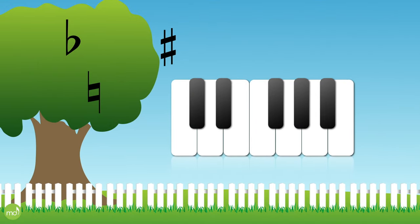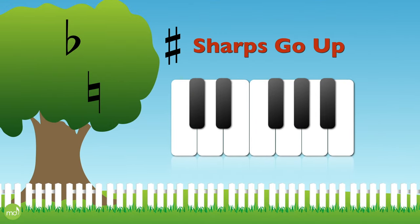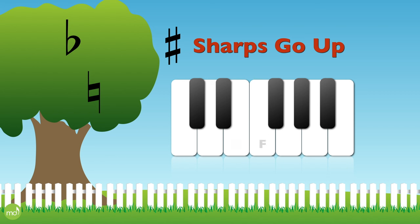Let's watch the sharps going up the keyboard. C goes up to C sharp, D to D sharp, E to E sharp. Hey, E sharp is a white key! F to F sharp, G to G sharp, A to A sharp.